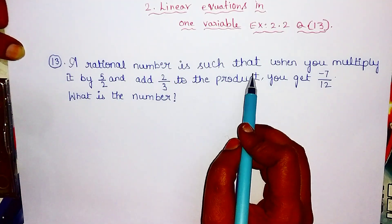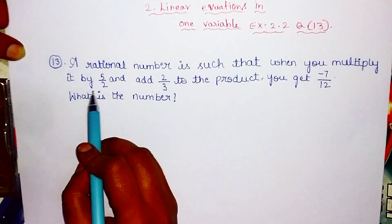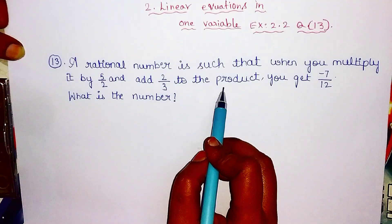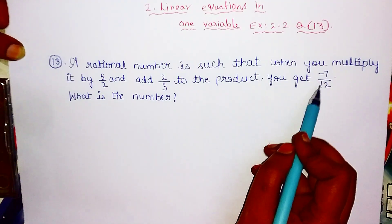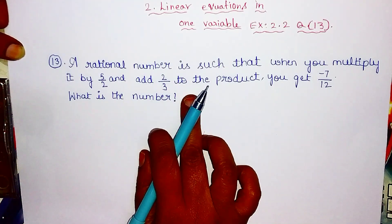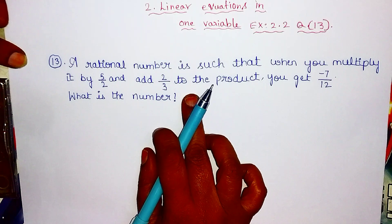A rational number is such that when you multiply it by 5 by 2 and add 2 by 3 to the product, you get minus 7 by 12. What is the number?